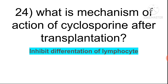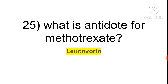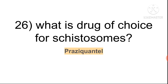Question twenty-four: mechanism of action of cyclosporine after transplantation — cyclosporine inhibits the differentiation of T-lymphocytes. Question twenty-five: antidote of methotrexate is leucovorin. Question twenty-six: drug of choice for schistosomiasis is praziquantel, the drug of choice for all schistosomes.